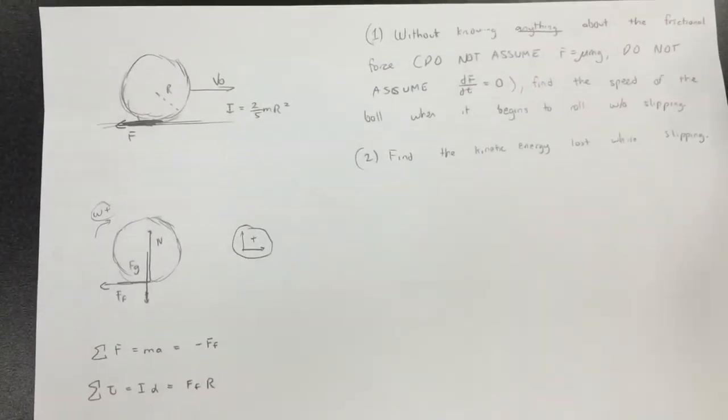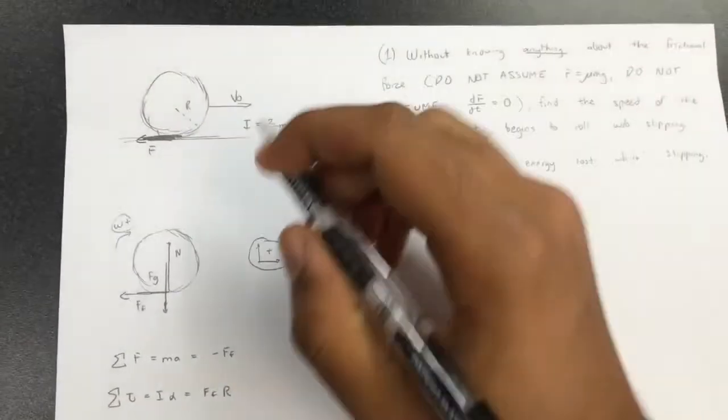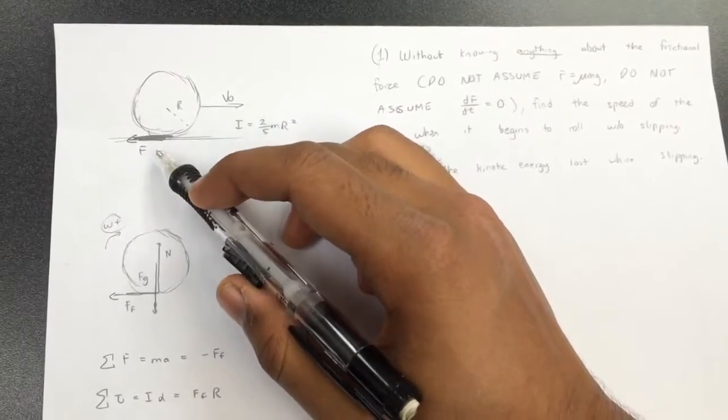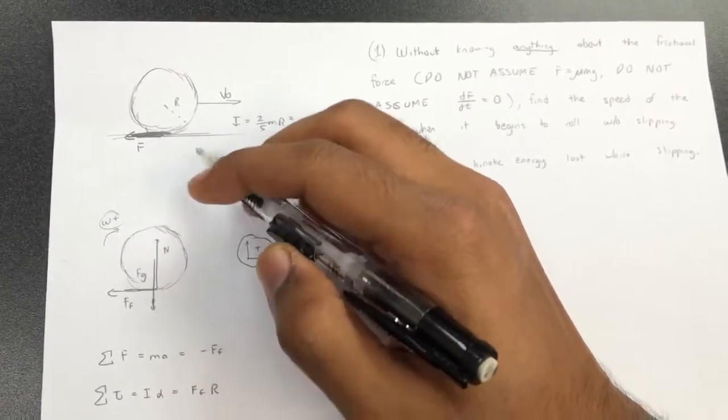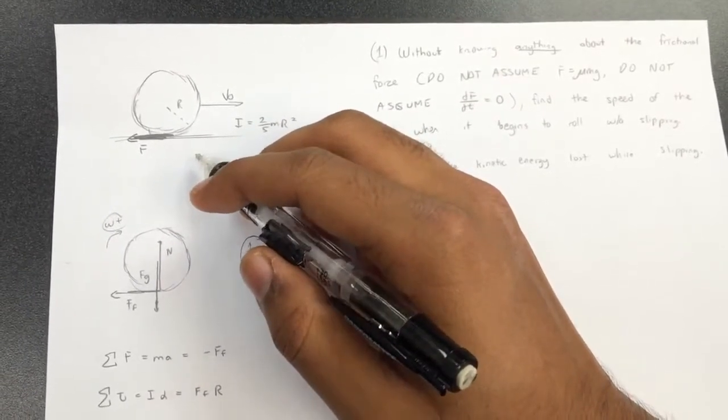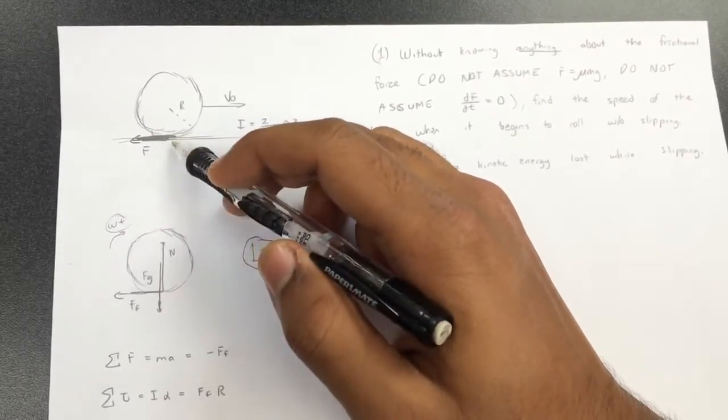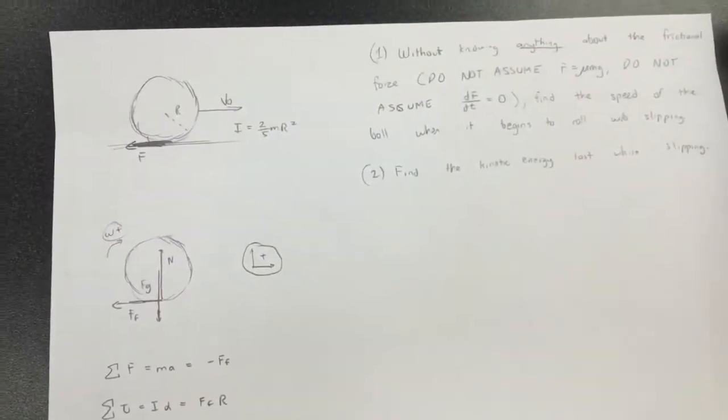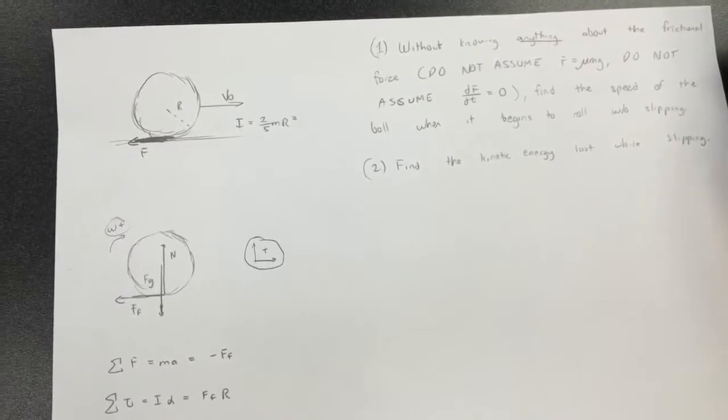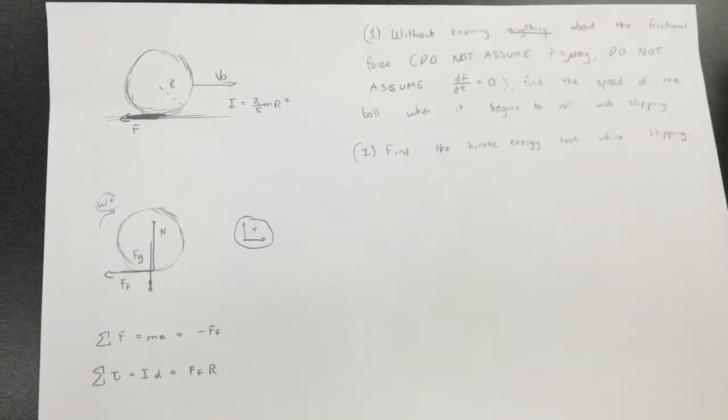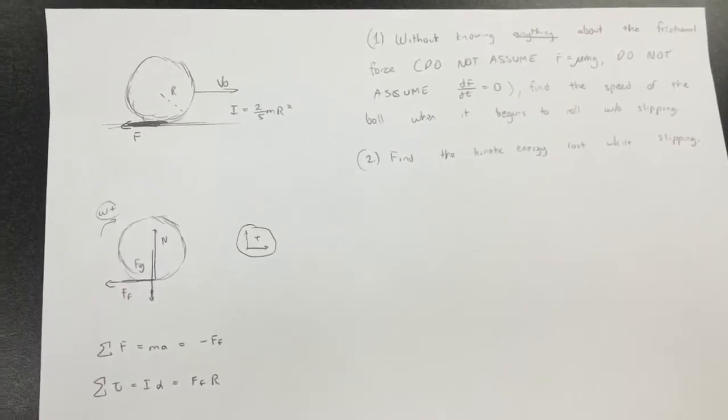And the interesting component of this is, without knowing anything about the frictional force, so don't assume it's μn, and don't assume that it's constant based on position. It could be variable, it could be anything. Find the speed of the ball when it begins to roll without slipping. And the second part of this question is, find the kinetic energy you lost while slipping.